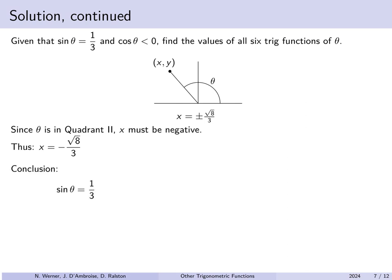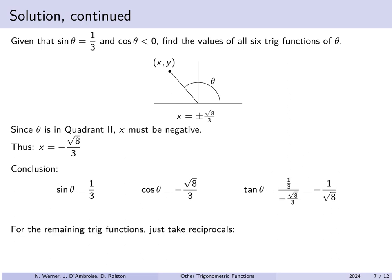Therefore, the sine of theta is 1/3, the cosine of theta is the x-coordinate, which we found to be −√8/3. The tangent of theta is the ratio between the two, which simplifies to −1/√8. For the remaining trigonometric functions — those are just reciprocals. Cosecant is the reciprocal of sine, which is 3. Secant is the reciprocal of cosine, which is −3/√8. And cotangent is the reciprocal of tangent, which is simply −√8.